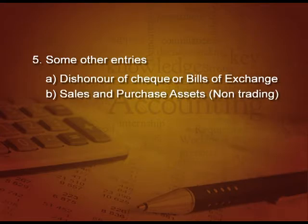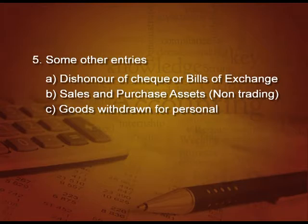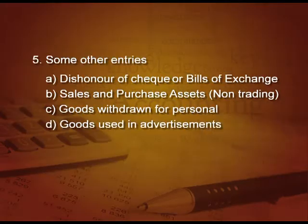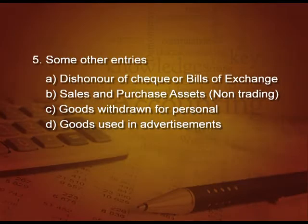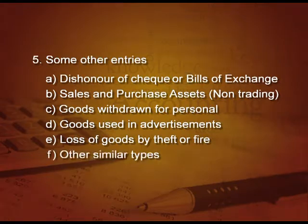There are some other entries which also come here. Dishonour of cheque or bill of exchange. Next, sale or purchase of asset on credit, because cash sale or purchase will go in the cash book. Next, goods withdrawn for personal use, that is drawings of goods. Next, goods used in advertisements, selling expenses, charity, etcetera. Loss of goods by theft, fire, etcetera. All other similar types of entries which do not find any place in the previously mentioned books will find a place here.